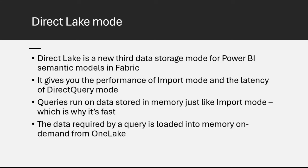Another aspect of this: if you're using Premium today, you will know that everything you do in Premium uses capacity units. And if you look in the Capacity Metrics app, what's eating those capacity units? Semantic model refresh is very, very expensive in terms of capacity units. It gets smoothed over 24 hours, but if you've got lots and lots of semantic models refreshing, that can all build up. You don't have any refresh with Direct Lake, so you're going to be saving a lot of capacity units—which might mean you can do more stuff on the same capacity or just have a cheaper capacity. It's going to save you money.